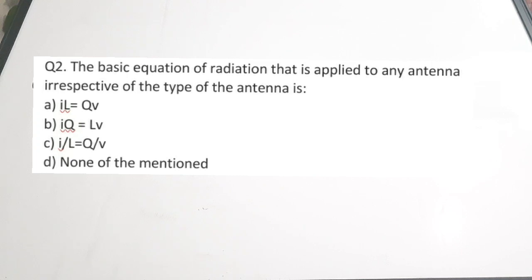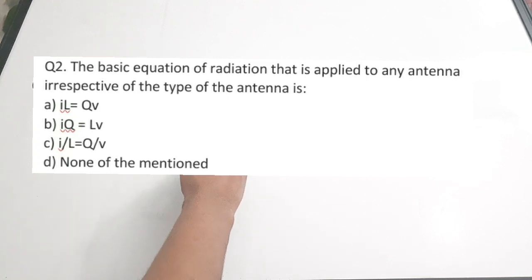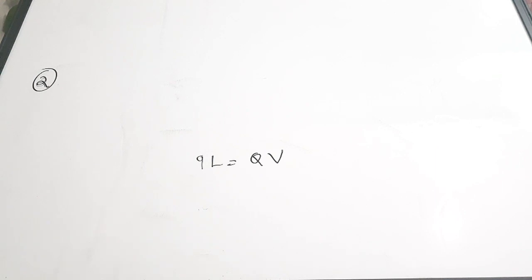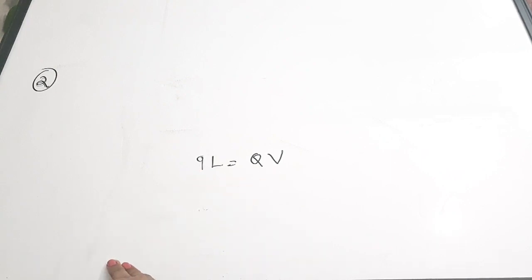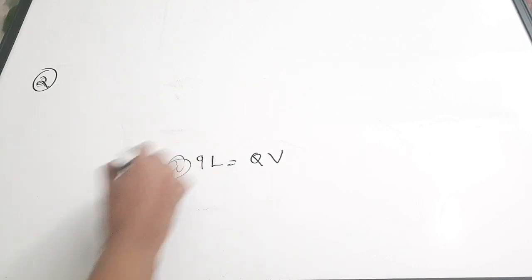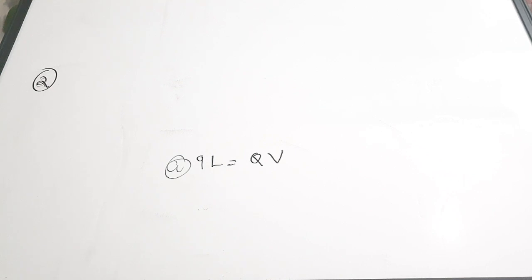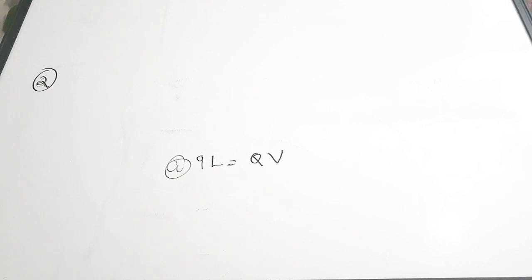The second question: the basic equation of radiation applied to any antenna irrespective of the type is — A. IL = QV, B. IQ = LV, C. I/L = Q/V, D. None of the mentioned. The basic equation for an antenna is IL = QV, where I is the time-changing current, L is the length of the current element, Q is the charge, and V is the acceleration of the charge. The correct answer is option A: IL = QV.